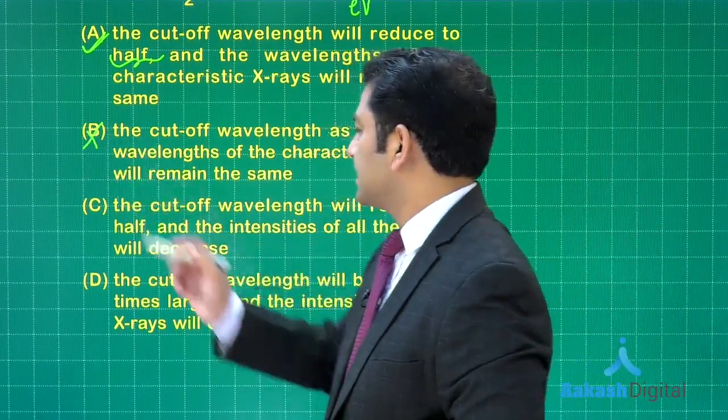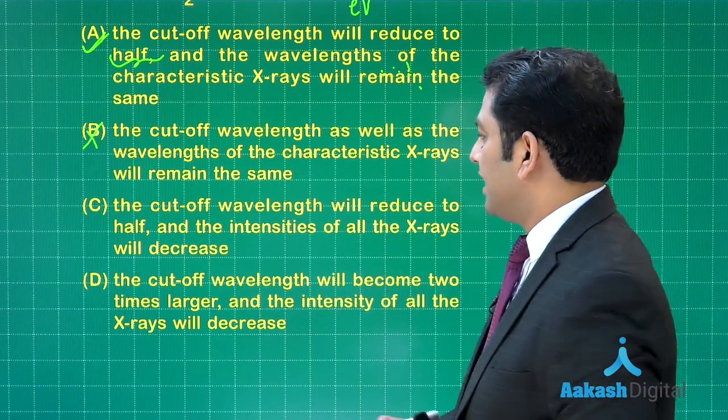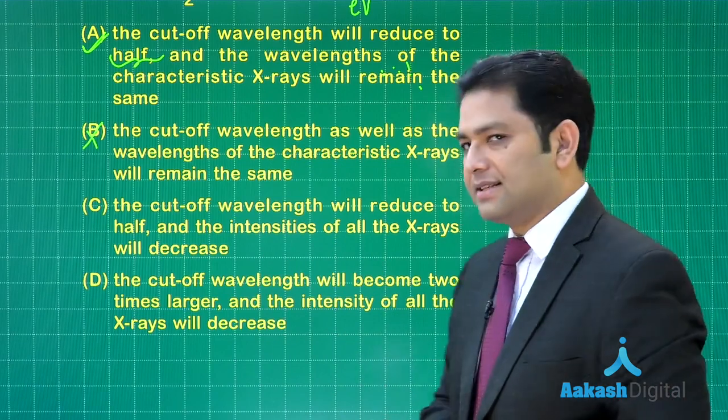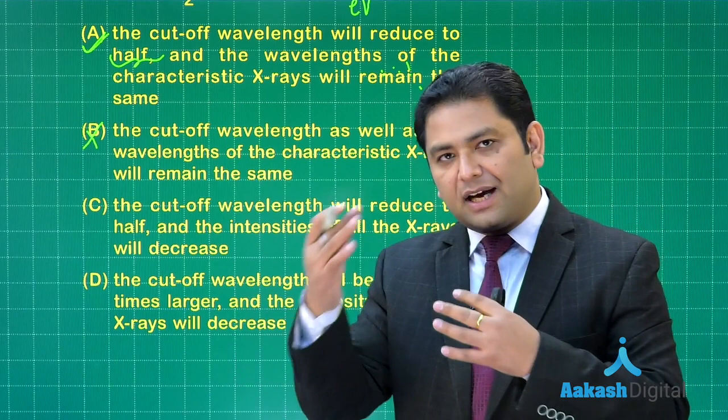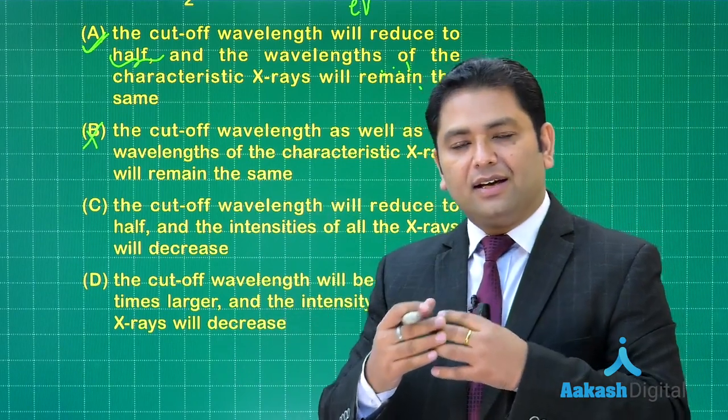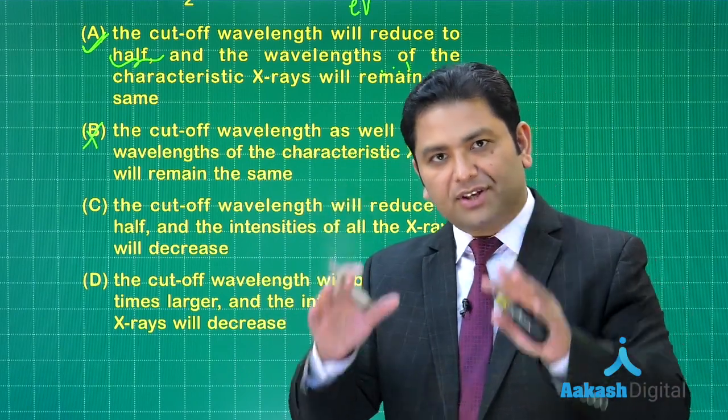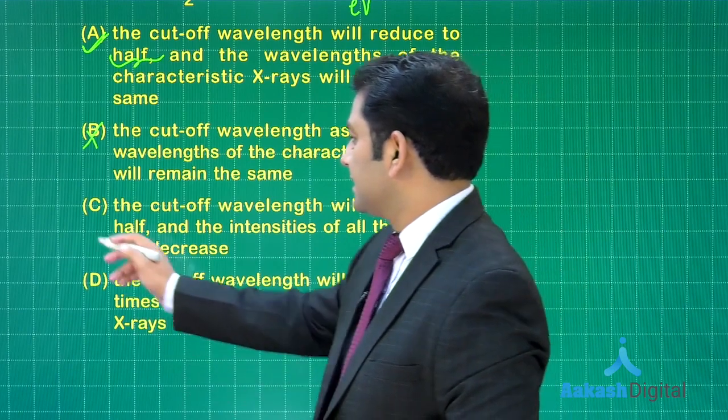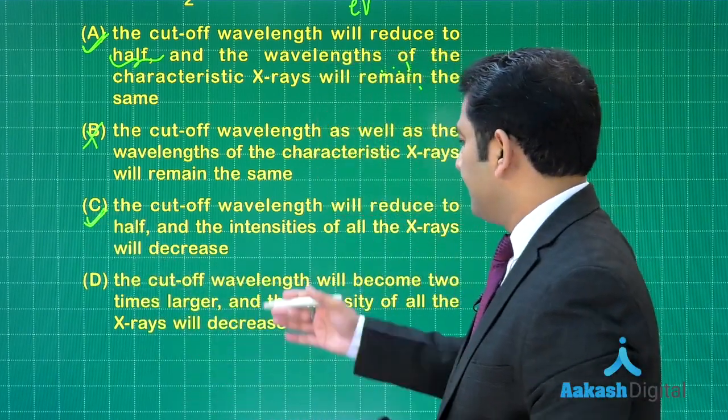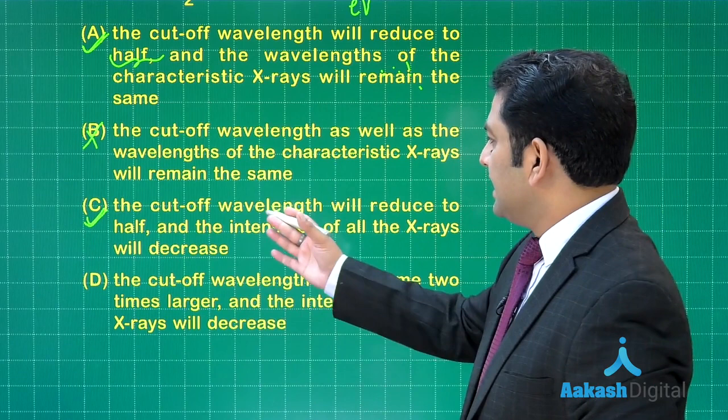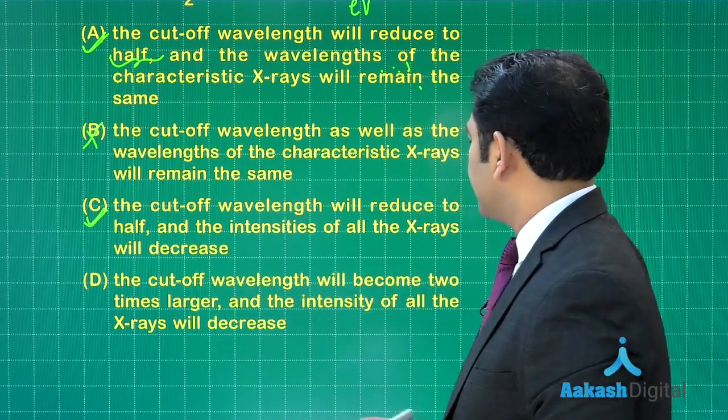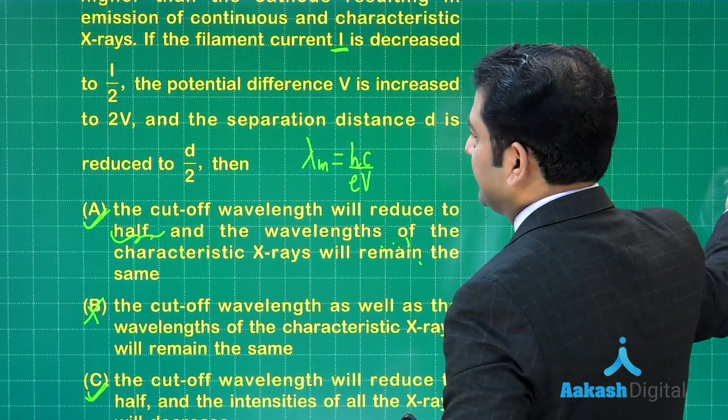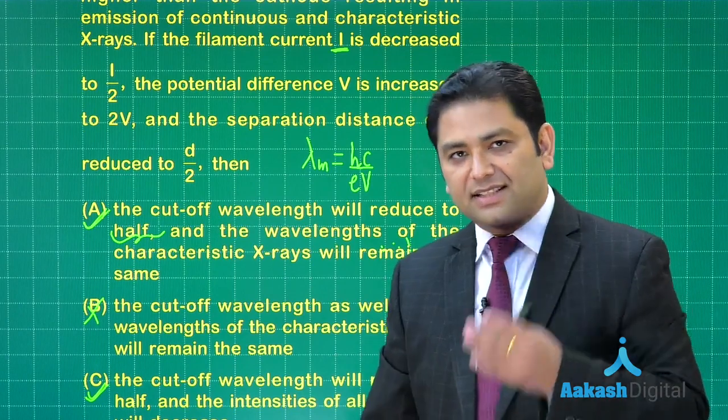Option C: the cutoff wavelength will reduce to half, and the intensity of all the x-rays will decrease. That's perfect because if the filament current is halved, the number of impinging electrons will reduce, consequently the number of emitted photons will also reduce, so the intensity will decrease. If C is correct, D would be incorrect because it says the cutoff wavelength becomes two times. So we have A and C as the correct options.